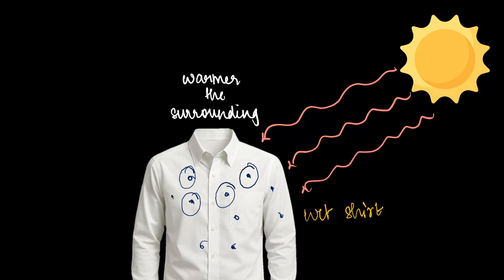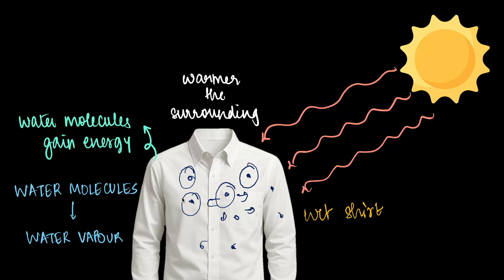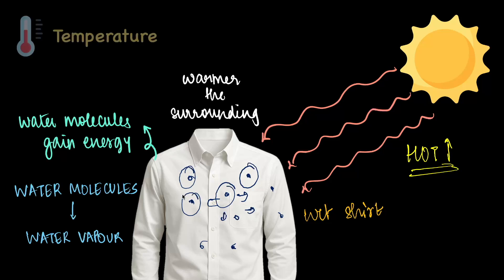Heat from the sunlight warms up the surroundings and the water trapped in the shirt. As this heat energy is absorbed, water molecules gain energy and start moving faster, overcoming the forces holding them together. Ultimately, the water molecules in liquid form escape into the air as water vapour. So, hotter the day, clothes dry faster — this is why temperature is a very important factor affecting evaporation: higher the temperature, faster the process.